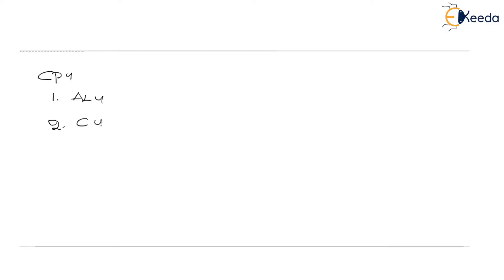Let us have a recap. CPU is essentially comprised of three parts: one is ALU, second one is the control unit, and the third one is a register set. In addition to which, the CPU motherboard is also equipped with something called main memory.